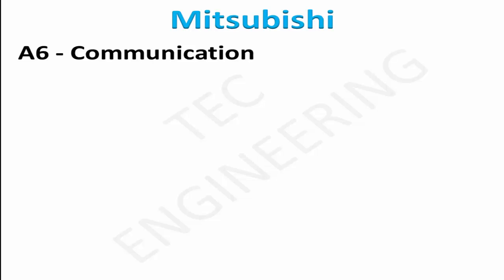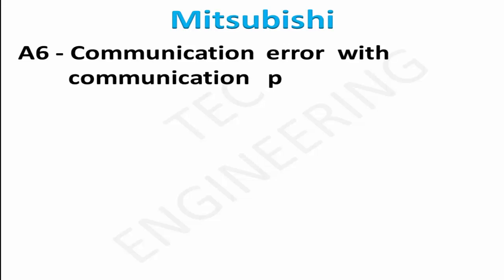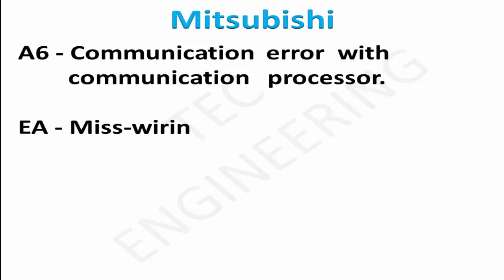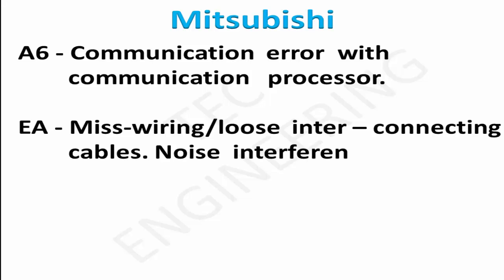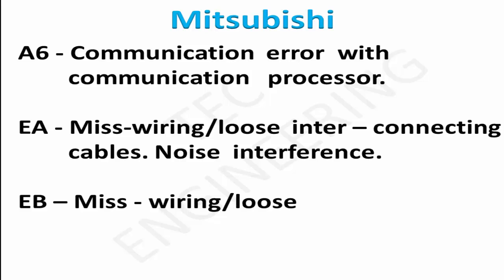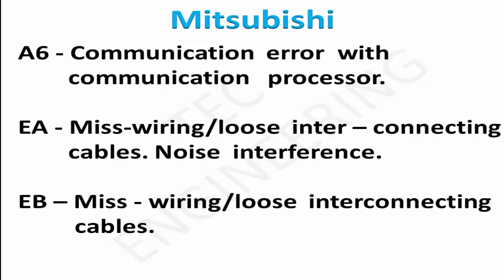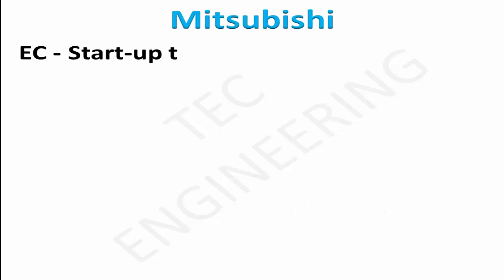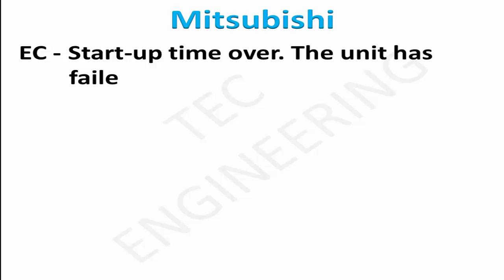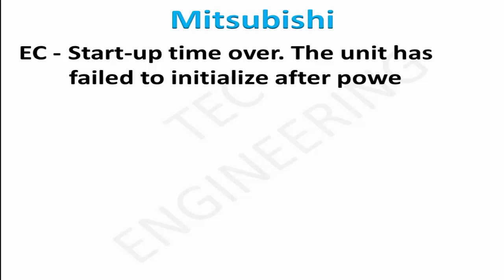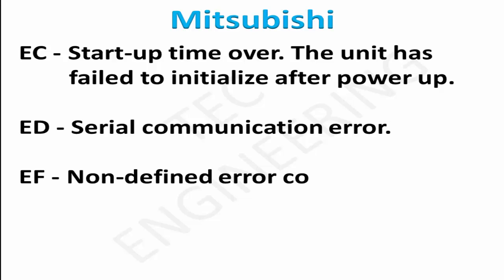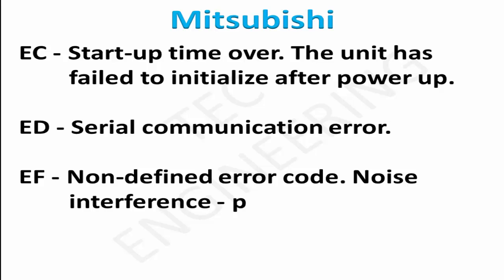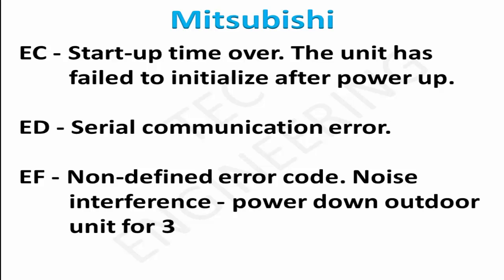A6: communication error with communication processor — caused by miswiring, loose interconnecting cables, or noise interference. EB: miswiring or loose interconnecting cables. EC: startup time over — the unit has failed to initialize after power up. ED: serial communication error. EF: non-defined error code — noise interference; power down the unit for 30 seconds then switch back on.